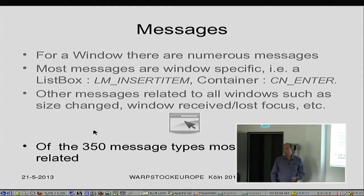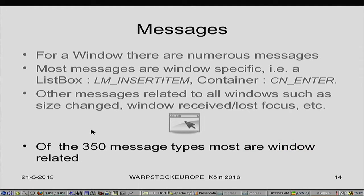Some messages are universal, like positioning a window — it doesn't matter which window type you have, if you reposition it we get the same message. But we don't get the same message when you press the enter key in a different type of window. The biggest problem I feel with PM programming is to know which message I need to look at.